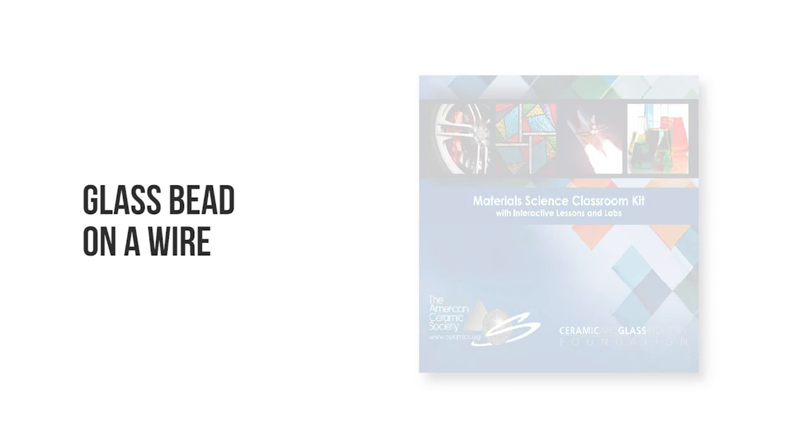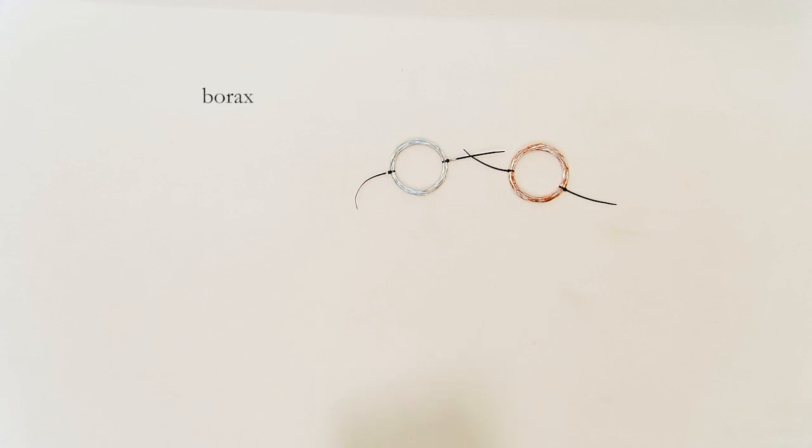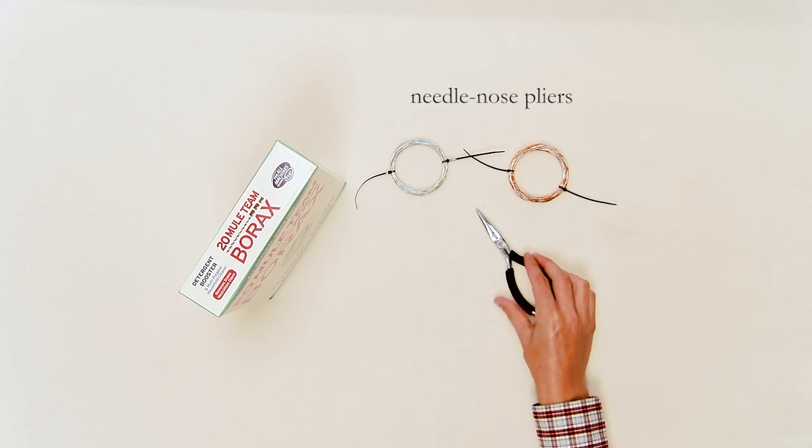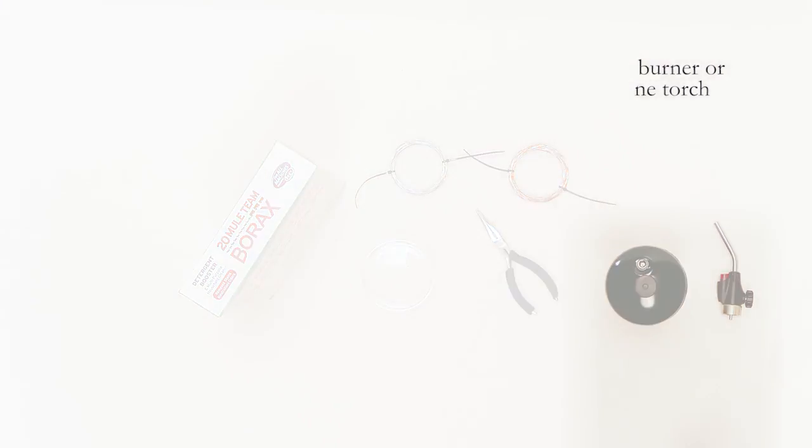The materials needed for this demonstration are 20 feet of copper wire, 20 feet of nichrome wire, powdered borax, needle nose pliers or tweezers, watch glass or heat resistant container for the borax, and a Bunsen burner or propane torch.